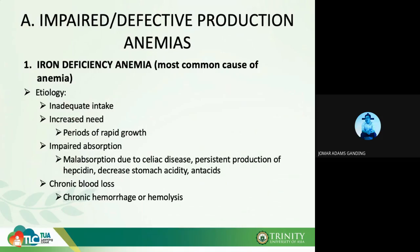Iron deficiency anemia is actually the most common cause of anemia. There can be a lot of etiology for why iron deficiency anemia happens. First and foremost is inadequate intake of iron. Around one to two milligrams per day of iron is being excreted out of the body, so if your losses are greater than your intake, that would cause deficiency in your iron reserves.